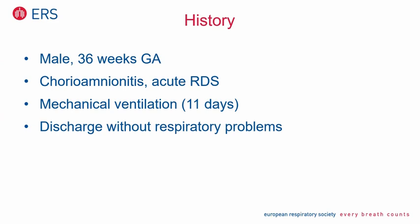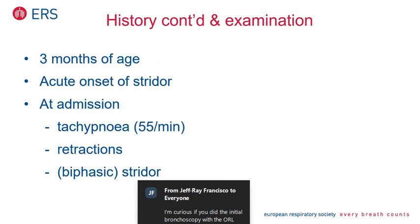Next case: again a male, slightly preterm baby, 36 weeks of gestational age. There was chorioamnionitis and acute respiratory distress syndrome. The child had to be intubated and mechanically ventilated for altogether 11 days, but then could be discharged without any respiratory problems — no sound, no noise, no stridor, no nothing. A completely normal child.